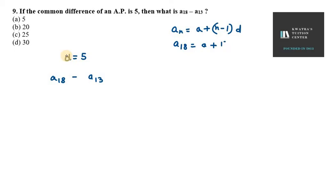Now for a13 you can write it as a plus 12d, same method. So we have the value of a18 as a plus 17d, minus in brackets the other term, that is a plus 12d.